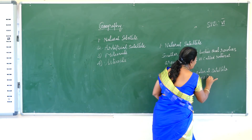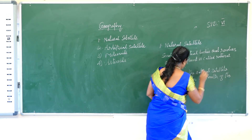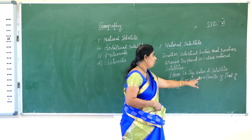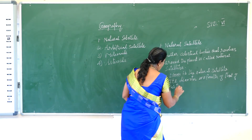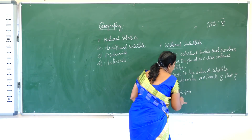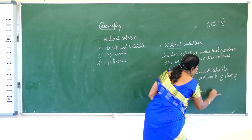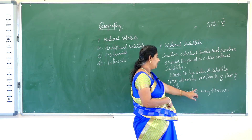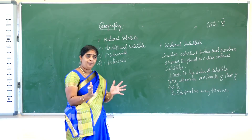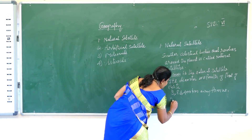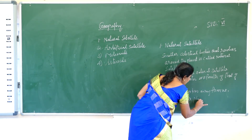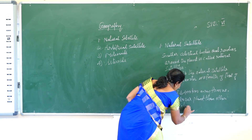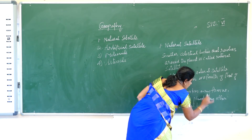The moon's diameter is one fourth of that of the earth. And it is 3,84,400 kilometers away from our planet earth. It appears very big because it is nearer to our planet than other celestial bodies.